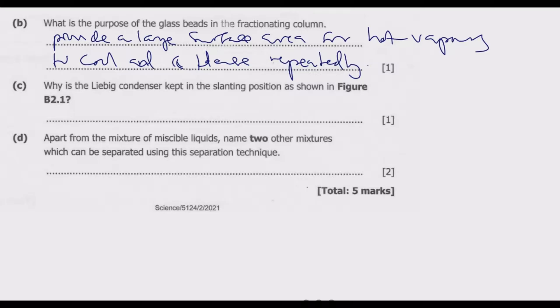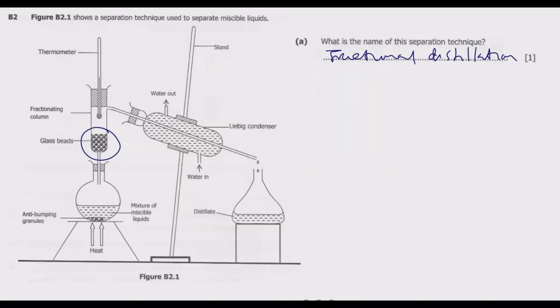We move to question C. Why is the Liebig condenser kept in the slanting position as shown in figure B2.1? So why is this kept in this slanting position? That's what we are required to explain.